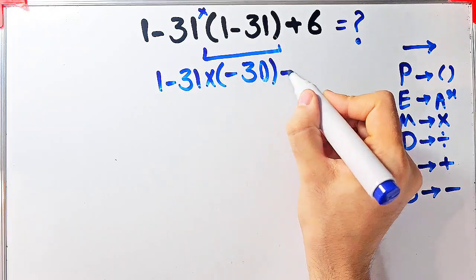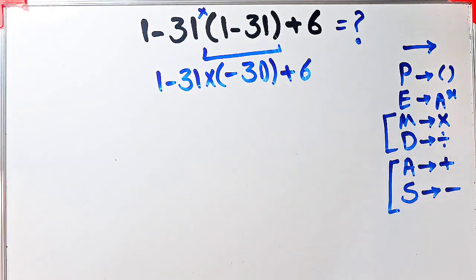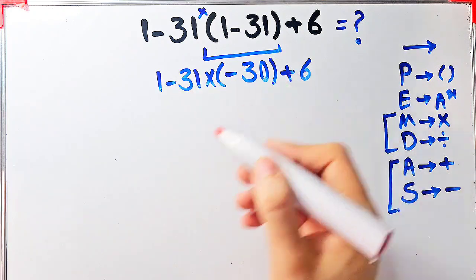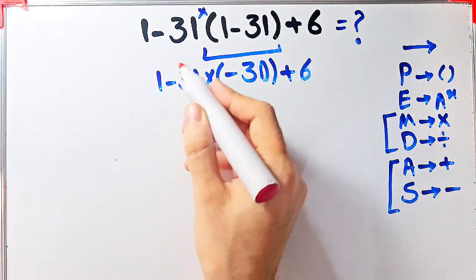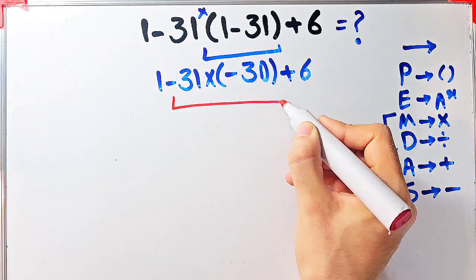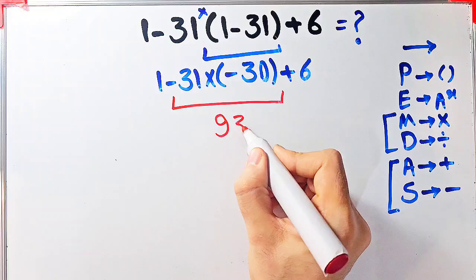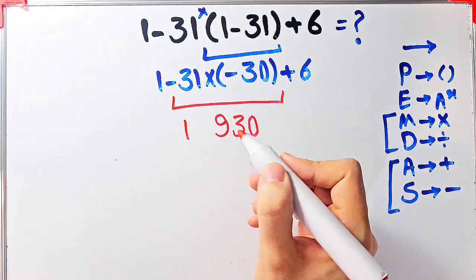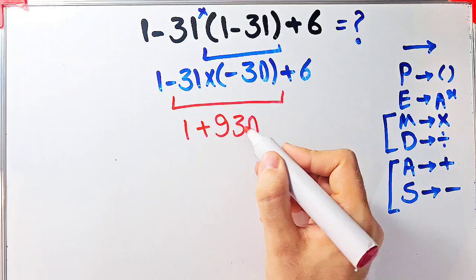In this step we have subtraction, multiplication, and addition. First we simplify this multiplication. Negative 31 times negative 30 equals 930. Now the question is 1 plus 930 plus 6.